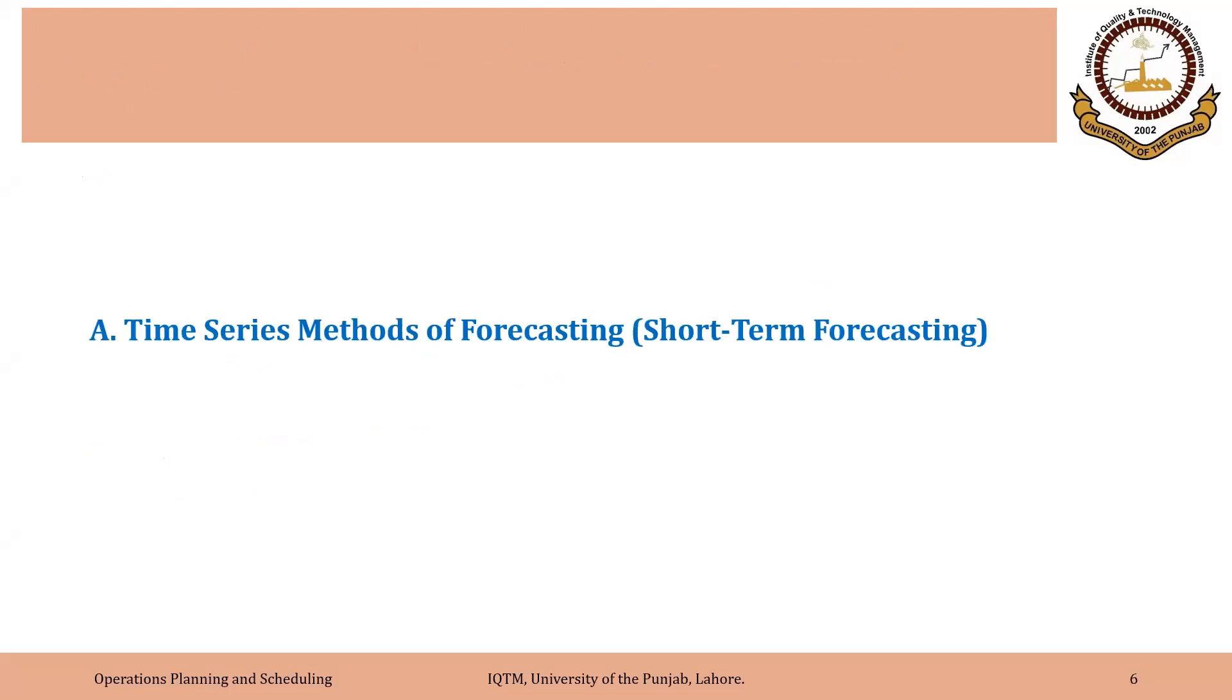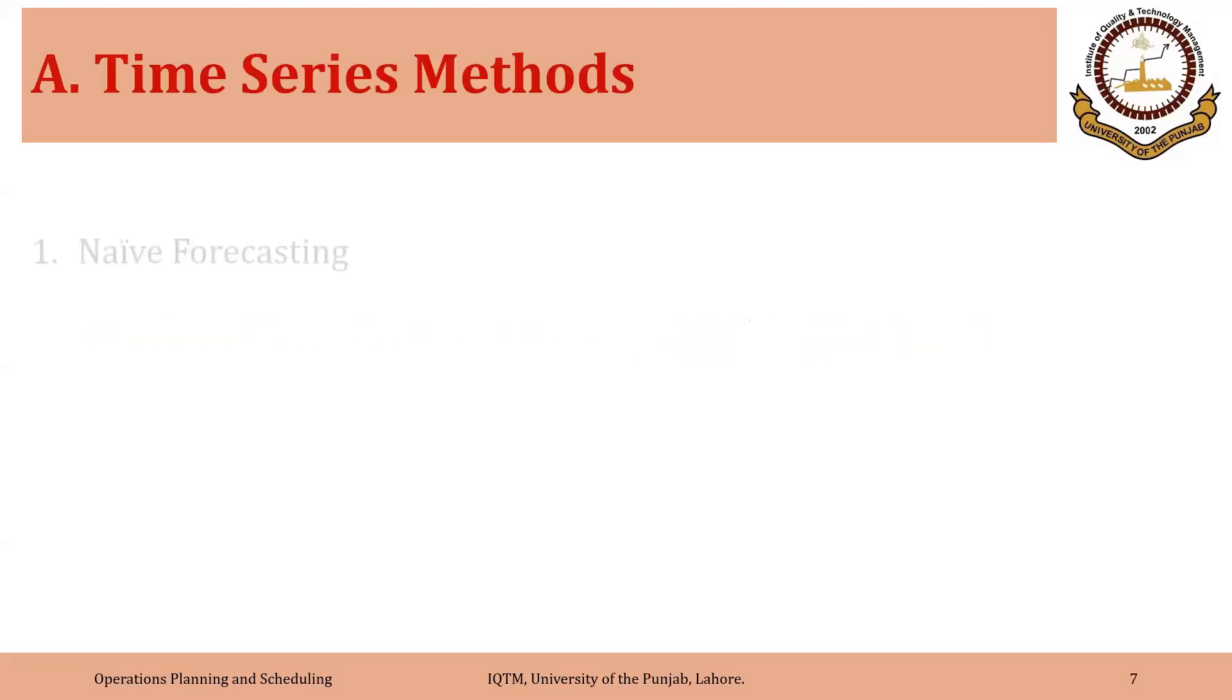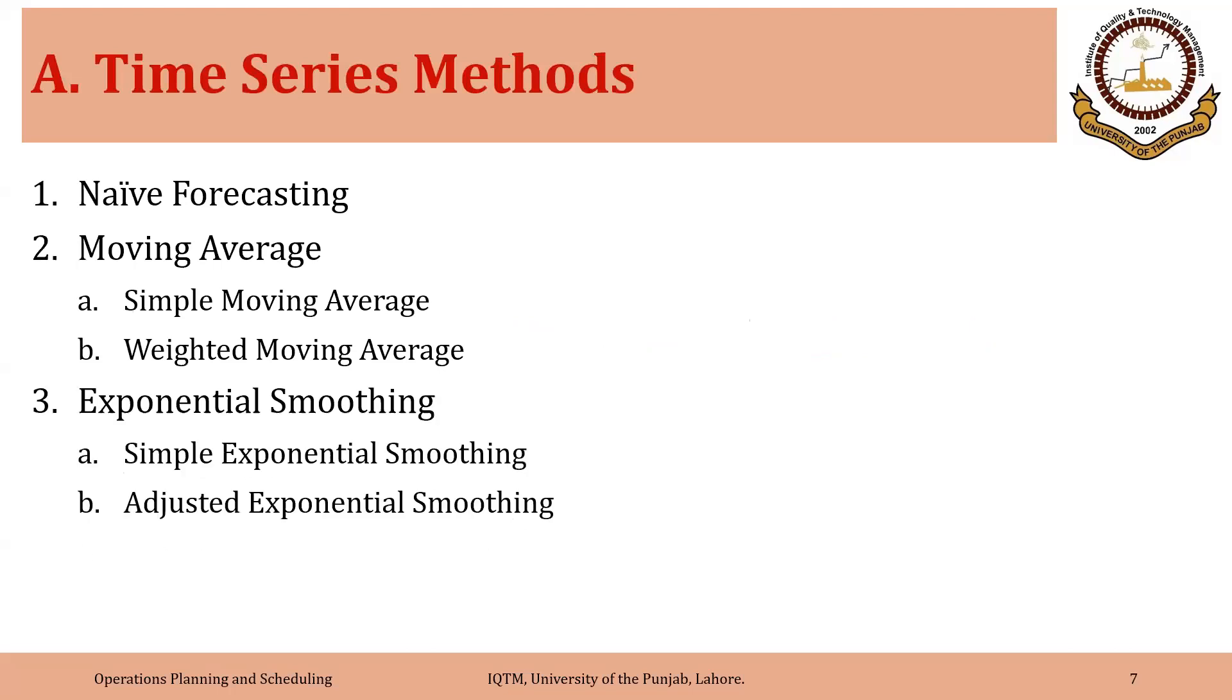So first we will discuss time series methods of forecasting. I repeat that they are generally used for short term forecasting. So the three methods that we will focus on are naive forecasting, moving average and exponential smoothing. And in moving average we will discuss simple moving average and weighted moving average. And in exponential smoothing we will discuss simple exponential smoothing and adjusted exponential smoothing.